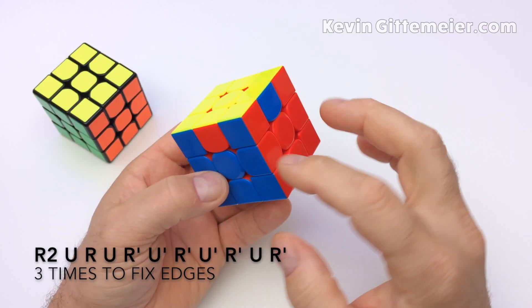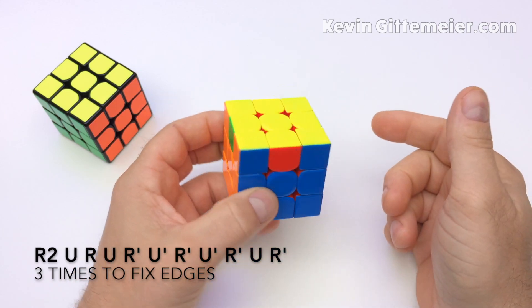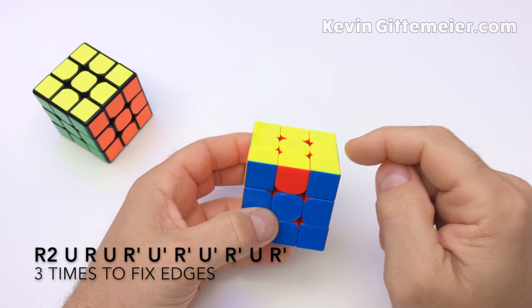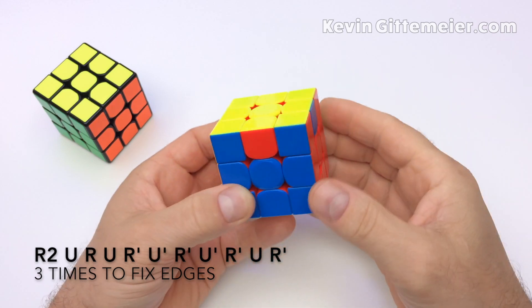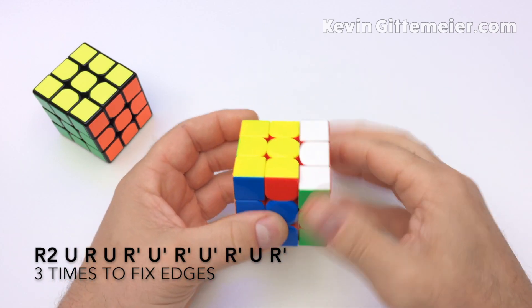Okay, here's another example of all four edges wrong, but wrong differently. Last time, these two needed to trade. This time, they need to trade diagonally. So, let's perform the algorithm once.